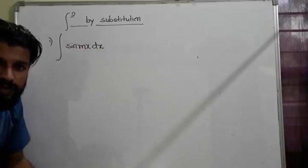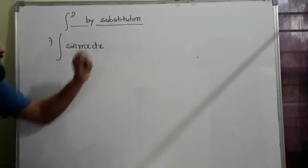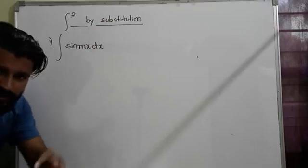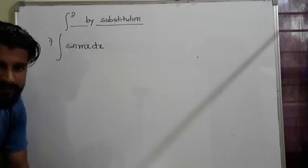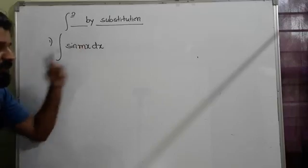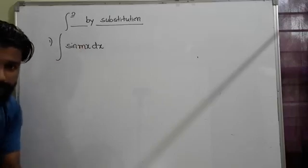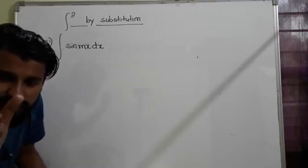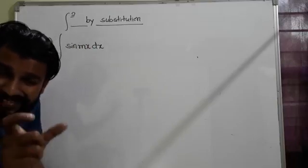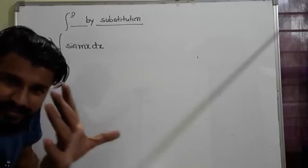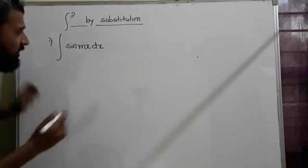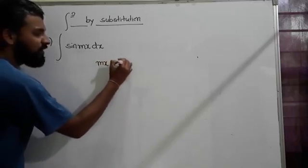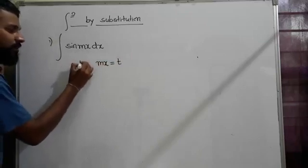For the adjustment, we call it substitution. In the next question, I have written it differently so you'll understand. The one which is making problems for us, we substitute it as some variable t. So we substitute mx as t - put mx equal to t.